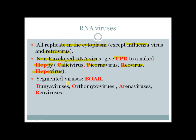The first three viruses in BOAR are negative-strand and segmented. Reovirus, however, is a positive-strand, non-enveloped virus that also has a segmented genome. Let's start with Reovirus — it doesn't have any envelope, and very importantly it has a double-stranded RNA genome with an icosahedral structure.